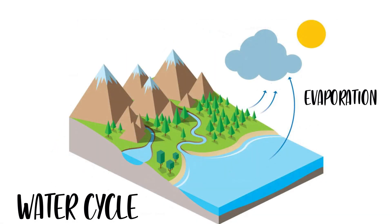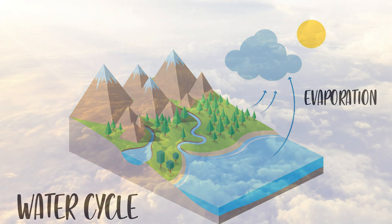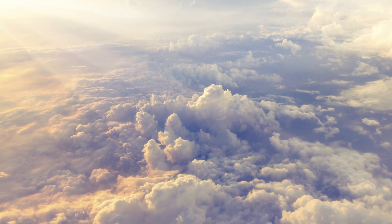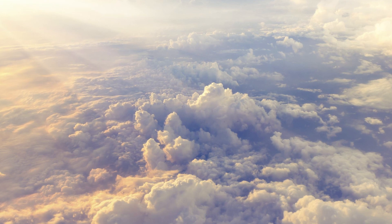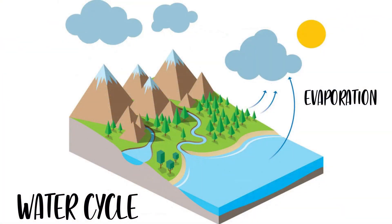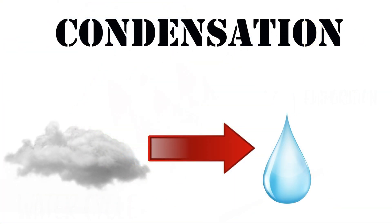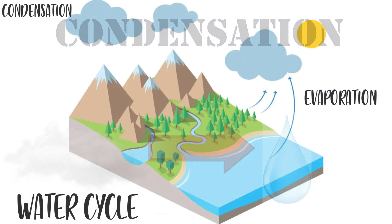But since almost all of the planet is covered by oceans, that's where most of the water evaporates from. This water vapor rises in the atmosphere and forms clouds that, when cooled enough, cause the water to condense. This process is called condensation, which is the change of state of water from gas to liquid.